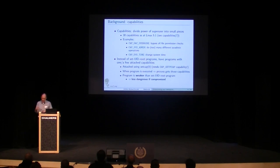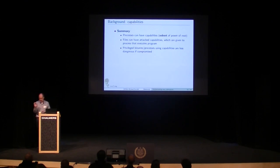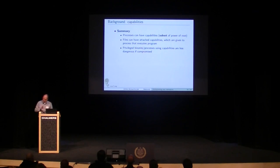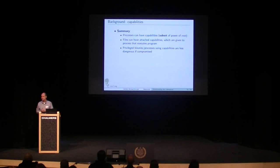So we've got the concept of capability binaries that are less dangerous than set-user-ID root binaries. To summarize: processes can have capabilities — some subset of the power of root. Files can have capabilities, and if a process executes the file, the file gives those capabilities to the process. The idea is that we can have privileged processes and binaries that are less dangerous than traditional root processes or set-user-ID root binaries.